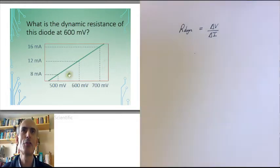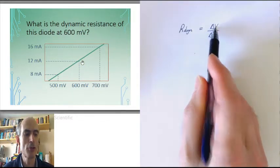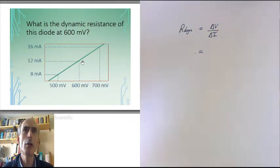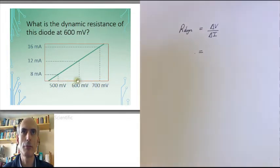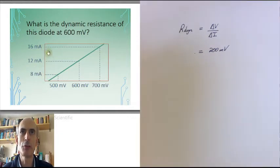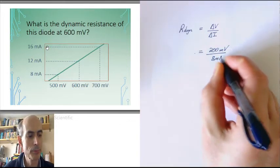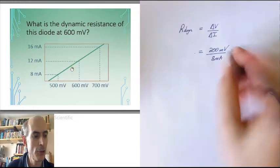Real diodes don't behave quite as nicely as this, but I've chosen a fictional diode which has a very linear characteristic over the range of voltages between 500 and 700 millivolts. What's the dynamic resistance? The dynamic resistance is the change in voltage divided by the corresponding change in current. Looking between 500 millivolts and 700 millivolts gives the best estimate of the gradient at 600 millivolts. From 500 to 700 millivolts, voltage increases by 200 millivolts; from 8 to 16 milliamps, current increases by 8 milliamps. So the dynamic resistance of this diode at this operating point is 25 ohms.